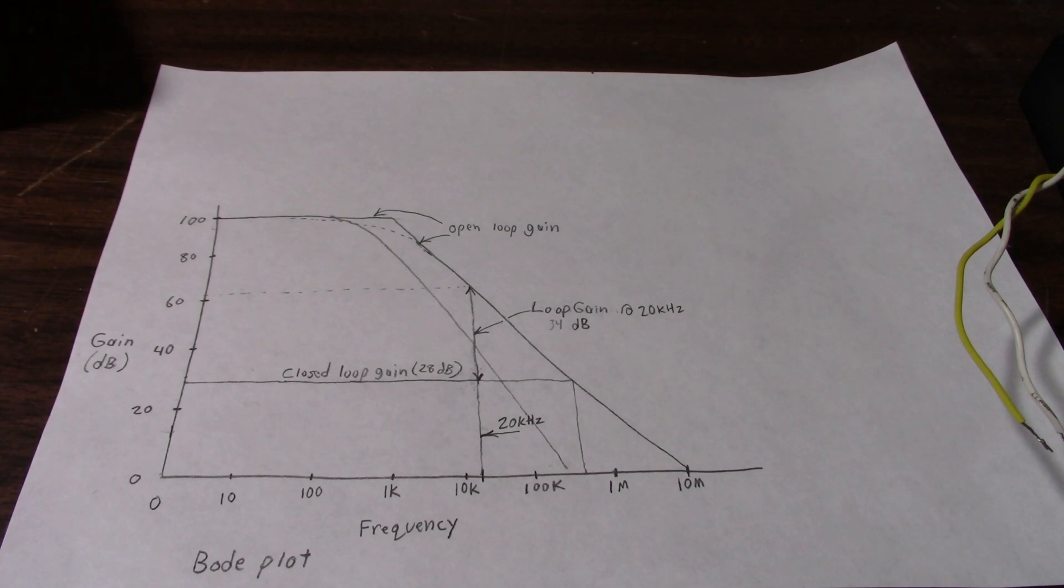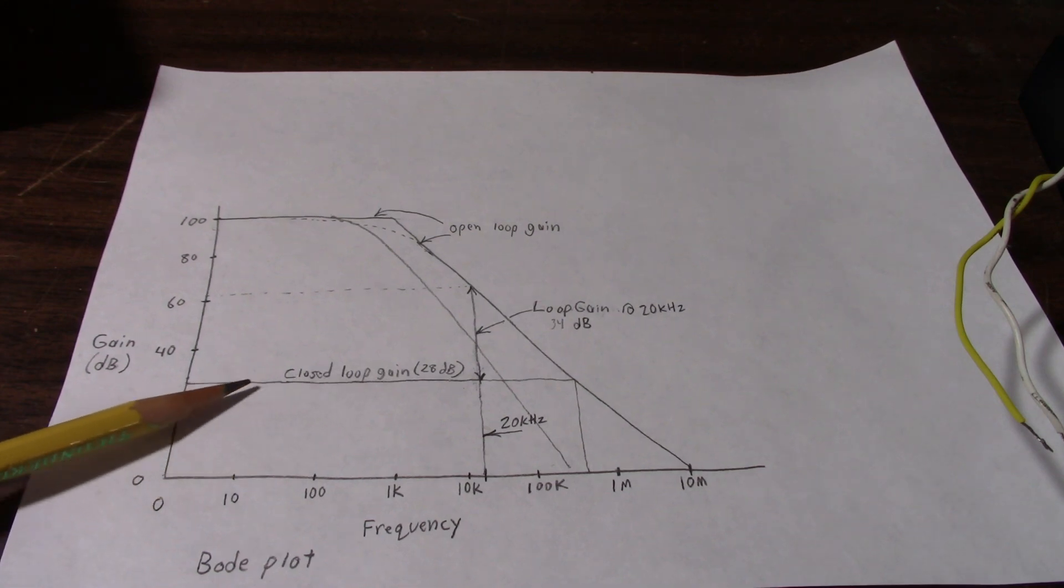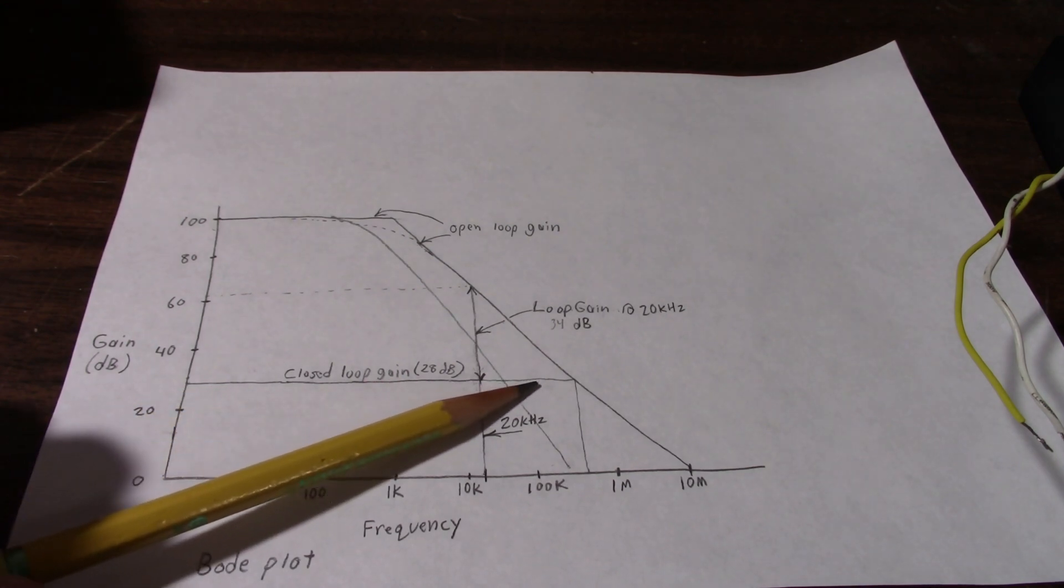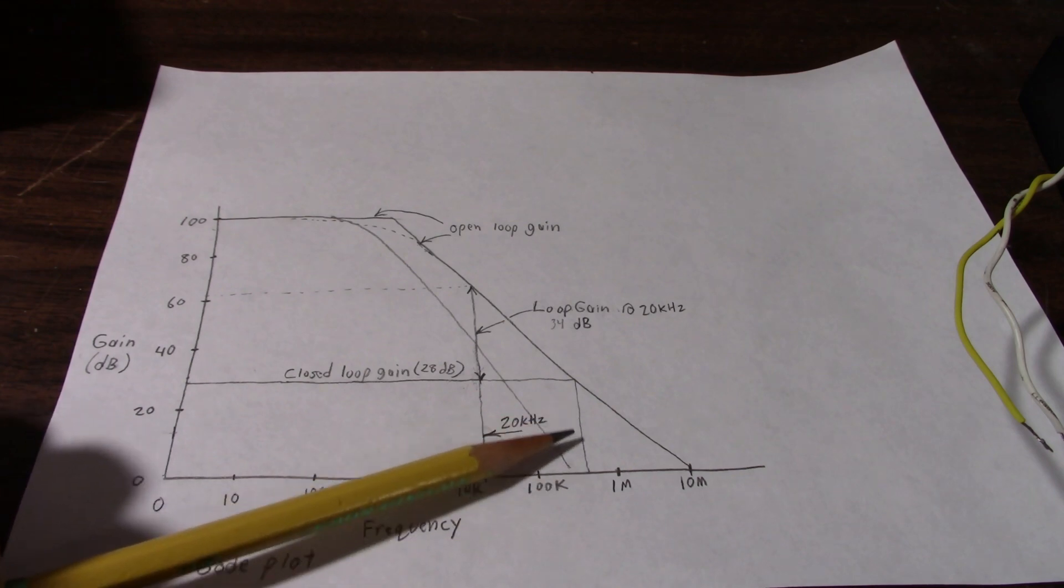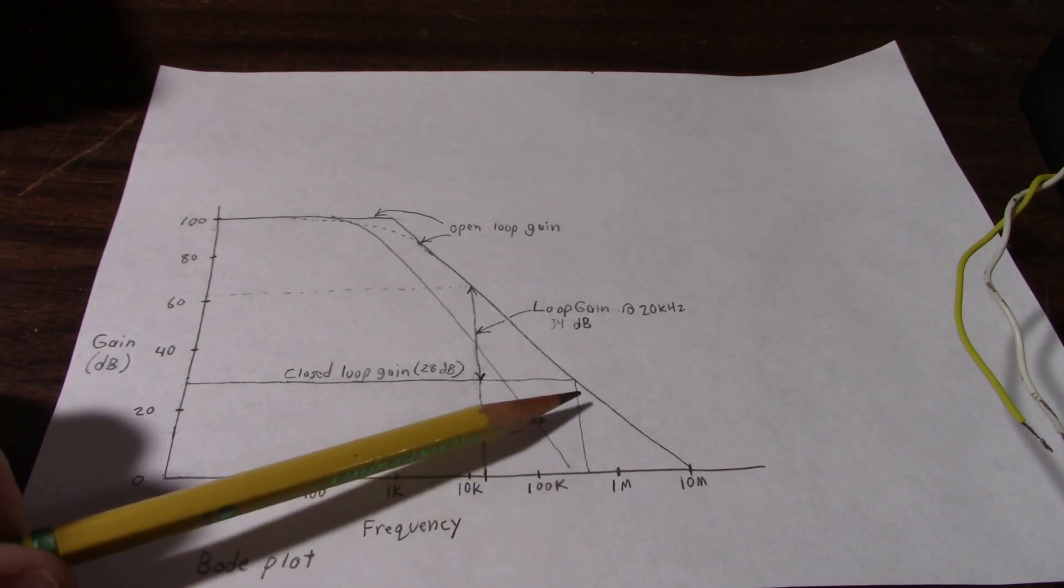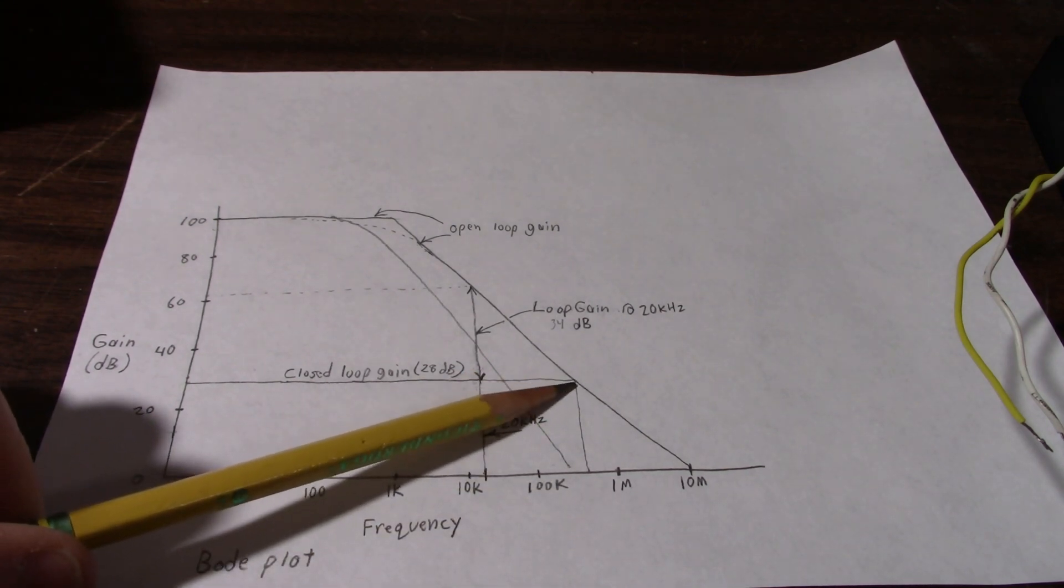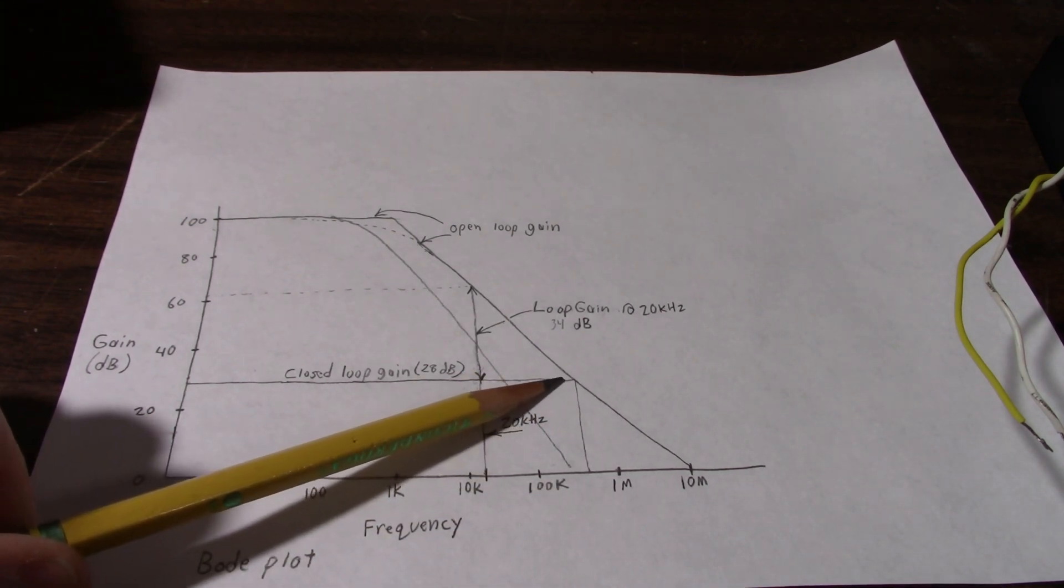If you ever looked at a spec sheet, it'll have the amplifier's power into 8 ohms, 20 to 20 kilohertz at some amount of distortion. And if you had to put something like 1% on there, it wouldn't look that nice for an expensive hi-fi amplifier. When the amplifier is operated in closed loop gain, you can see this response will be flat way out to this point. And as you can see, this is several hundred kilohertz.